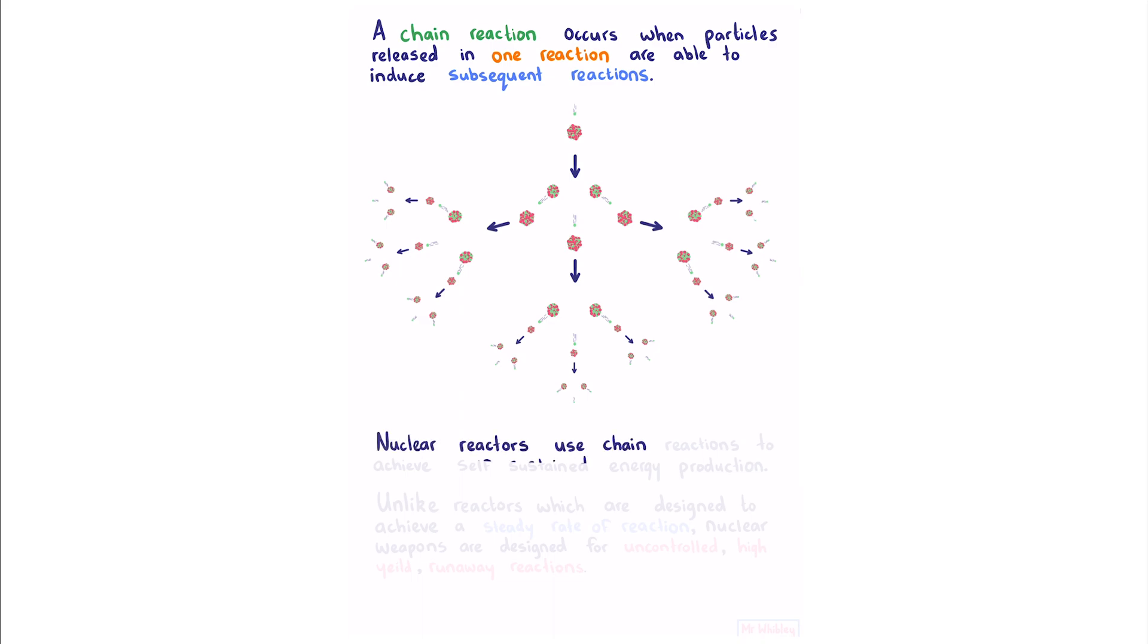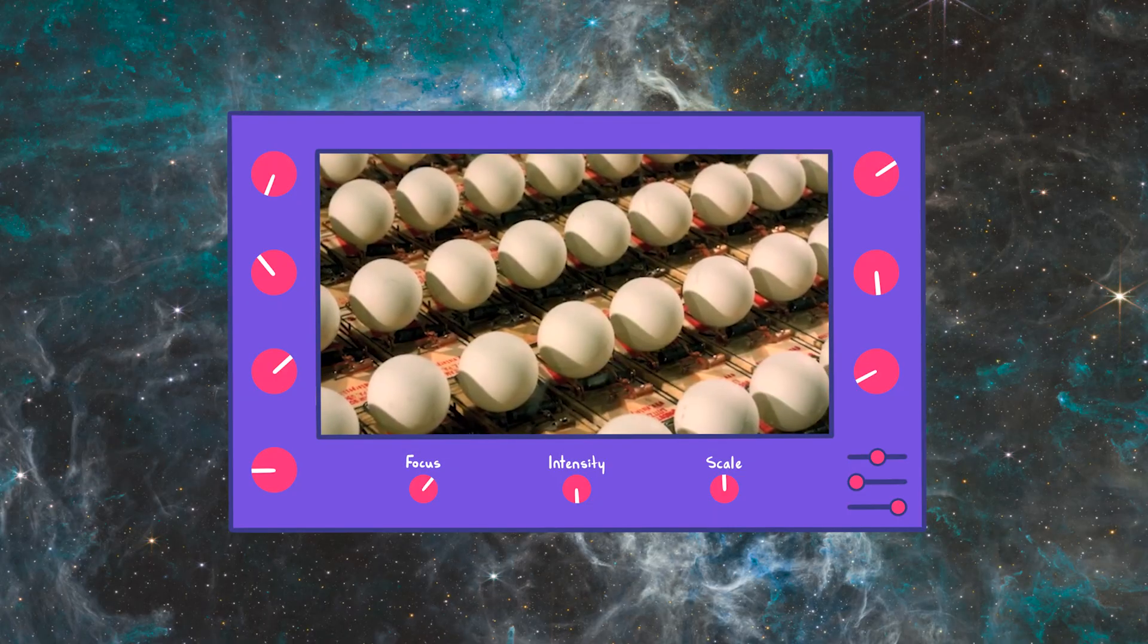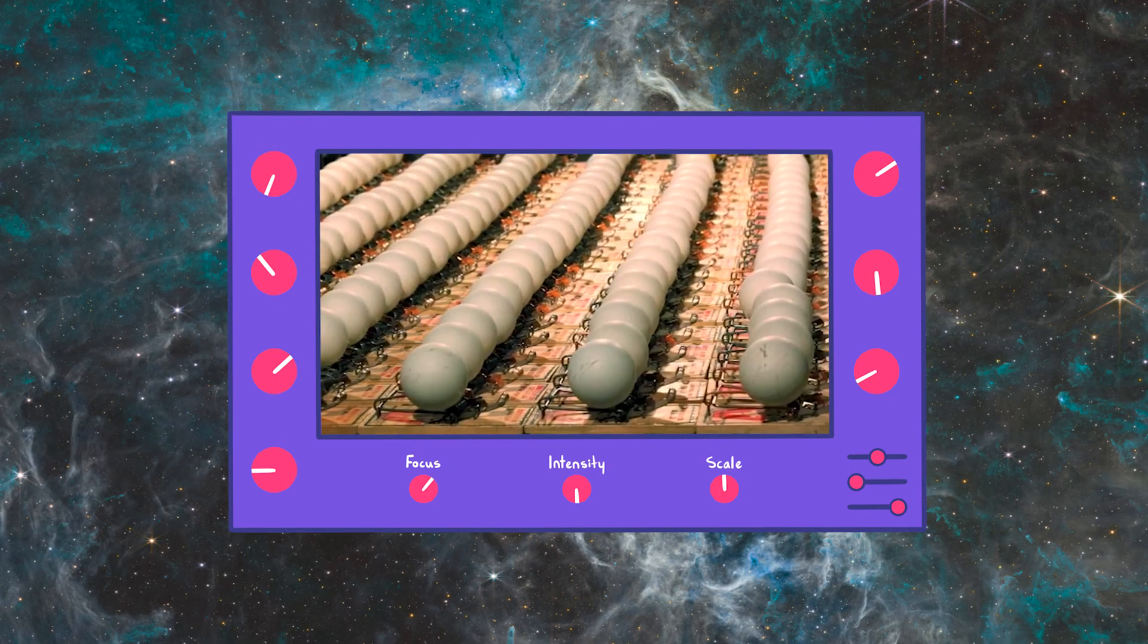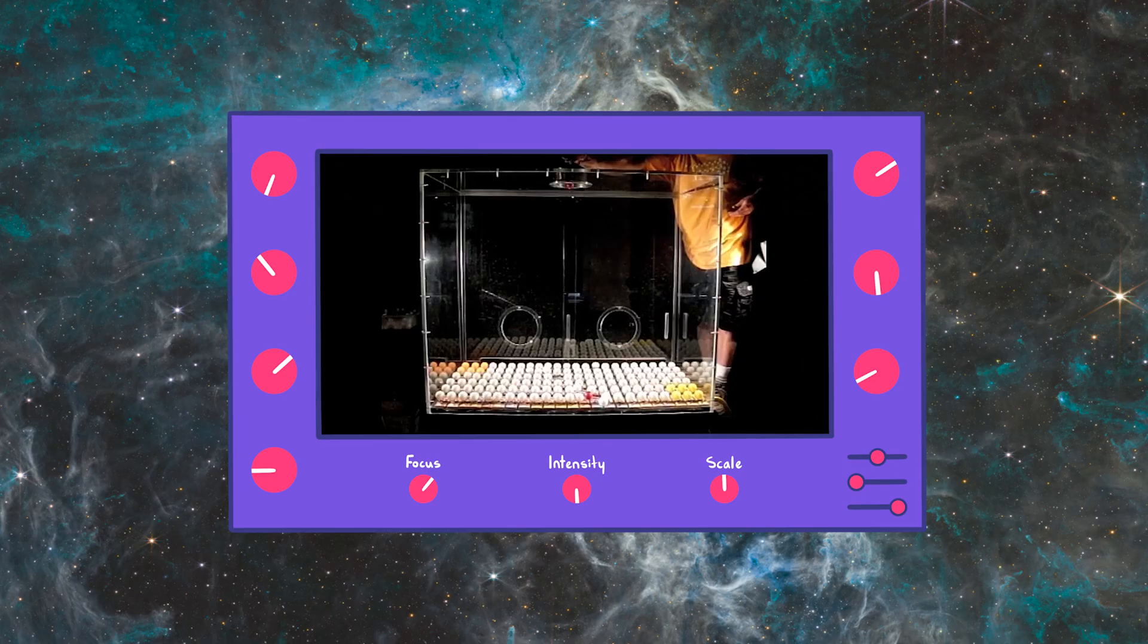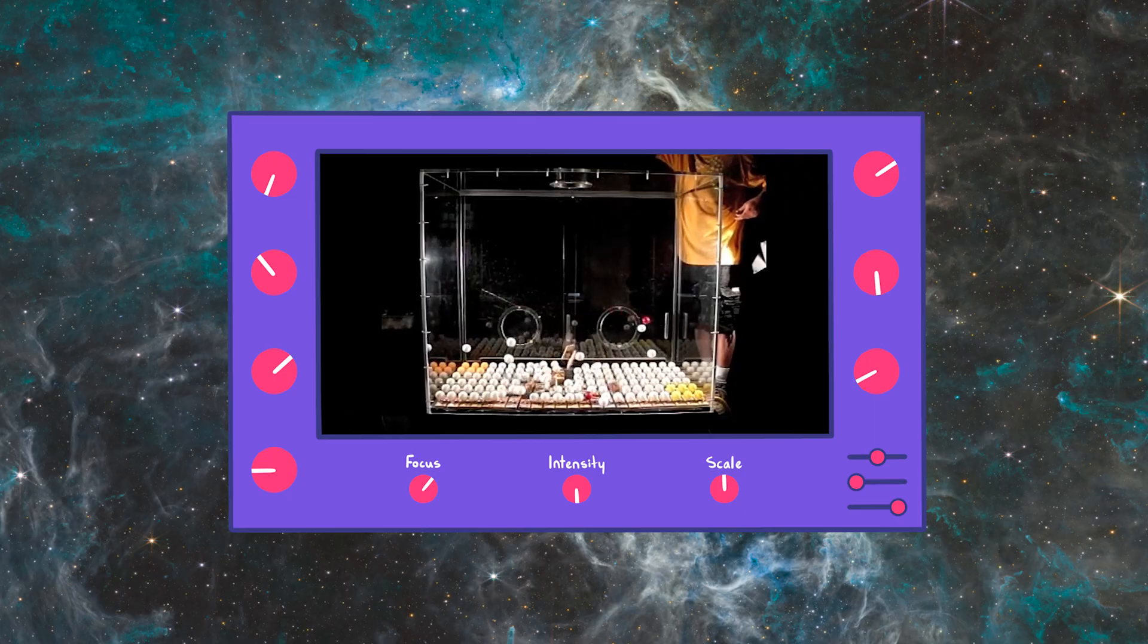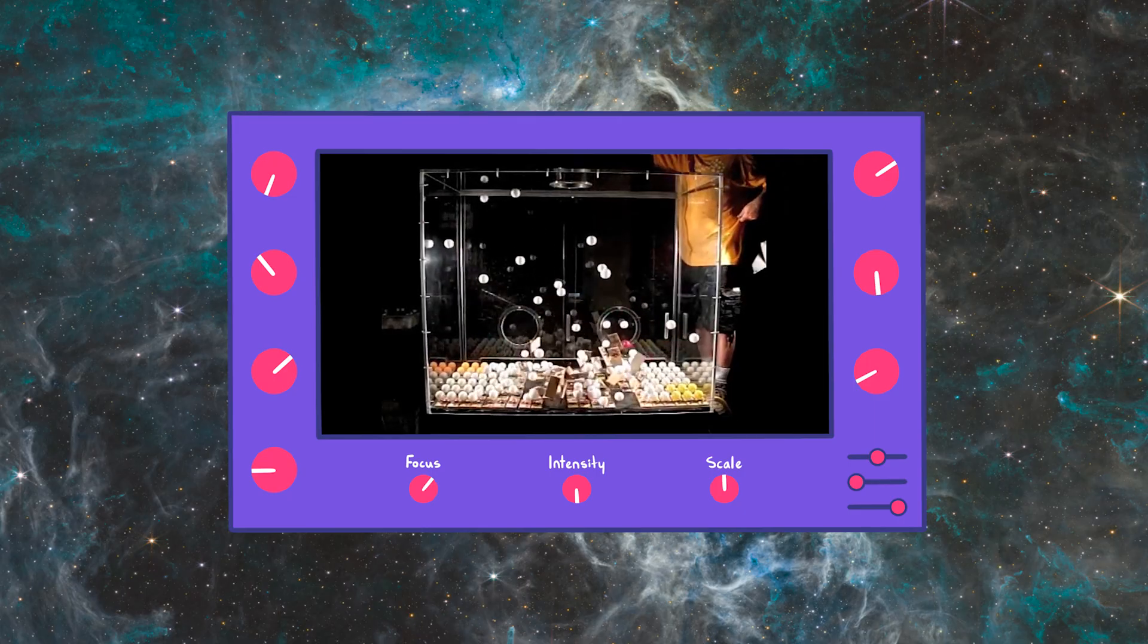Nuclear reactors use chain reactions to achieve self-sustained energy production. Unlike reactors, which are designed to achieve a steady rate of reaction, nuclear weapons are designed for uncontrolled high-yield runaway reactions. Here we have a useful analogy for a chain reaction. We start with one reaction, which has the potential to trigger more reactions, and those reactions more of their own. The result is a rapidly increasing rate of reaction.